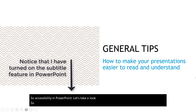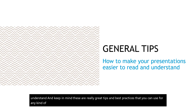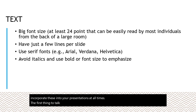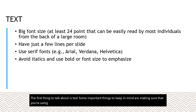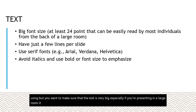Let's talk about some general tips for how to make your presentations easier to read and understand. Keep in mind these are great best practices you can use for any kind of presentation, even if you're not trying to make it more accessible. The first thing to talk about is text. Make sure you're using a big font size — at least 24 points — though that will depend on the font. It's even helpful to go into the room and check from the back that your text is easy to read.